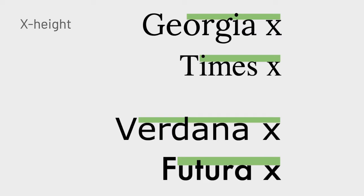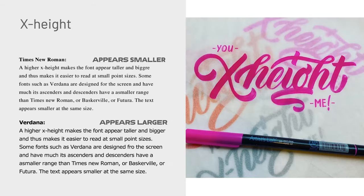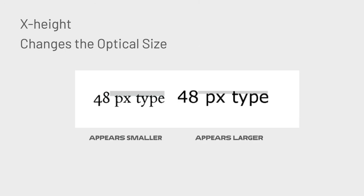Looking at some sans-serif versions: Verdana was also especially designed for the web by the same designer, while Futura was not designed for the web at all — that was way before the internet. Futura has a much lower x-height, which makes it look more stylish but also a little harder to read optically. You can compare the two: Verdana appears larger even though it's the exact same size. That's called the optical size — not the real size, but something we perceive as being larger.